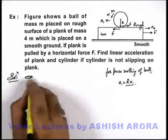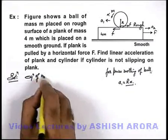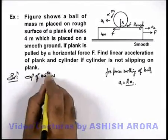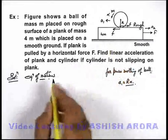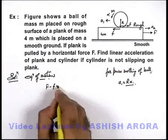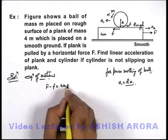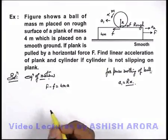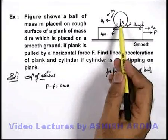So in this situation if we write equation of motion for plank, we can directly write F minus f equals 4m a2.